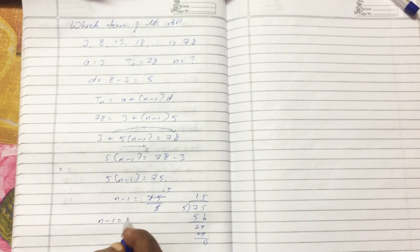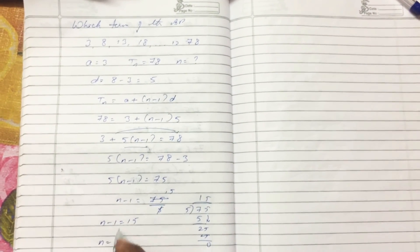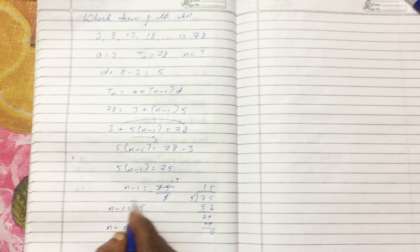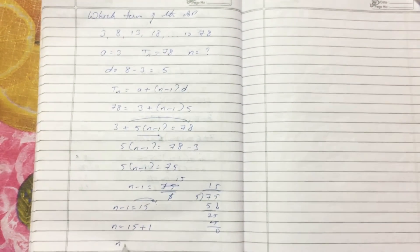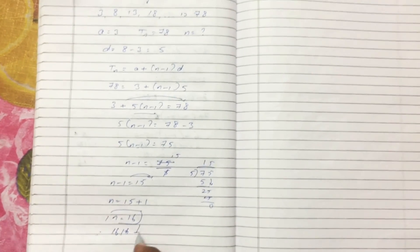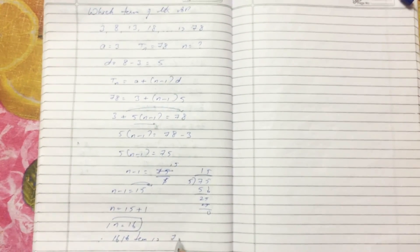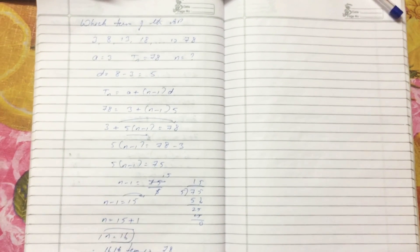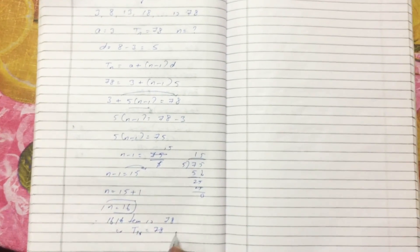N minus 1 equals 15. N equals, this one will transfer here, minus will become plus 1. N equals 16. Therefore, the 16th term is 78, or T16 equals 78. Thank you very much.